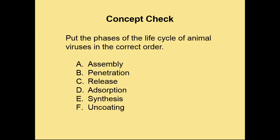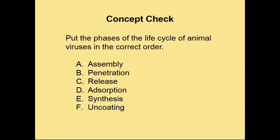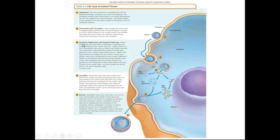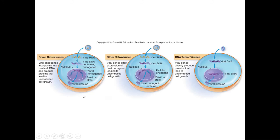Let's have a concept check. Put the phases of the life cycle of animal viruses in the correct order: assembly, penetration, release, absorption, synthesis, and uncoating. The correct answer is: step one is absorption, then penetration, then uncoating, then synthesis or replication, then assembly, and then release. If you have any other questions, shoot me an email or post them on the discussion board. Happy studies!